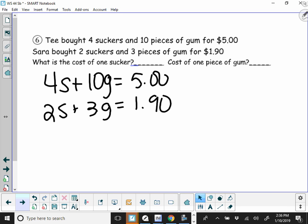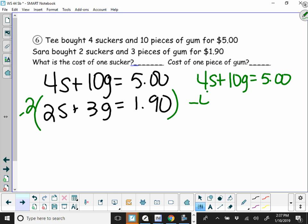So the easy way to cancel here is going to be to multiply your bottom equation by negative 2. So the top stays the same. The bottom becomes negative 4S minus 6G, and $1.90 times 2 is going to give you negative $3.80 because it's times a negative 2.